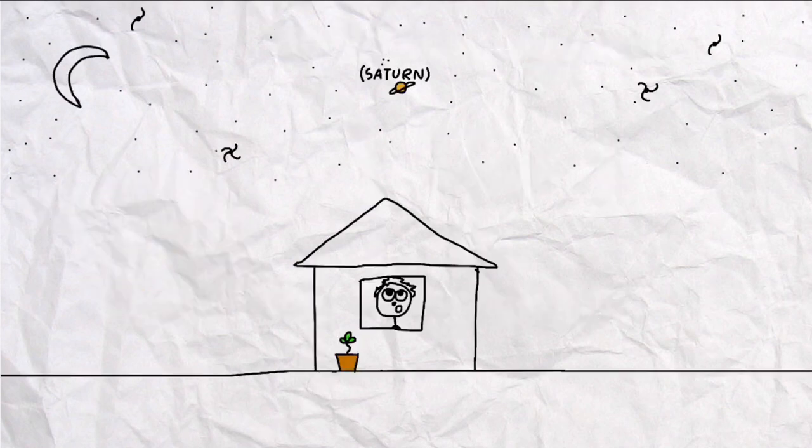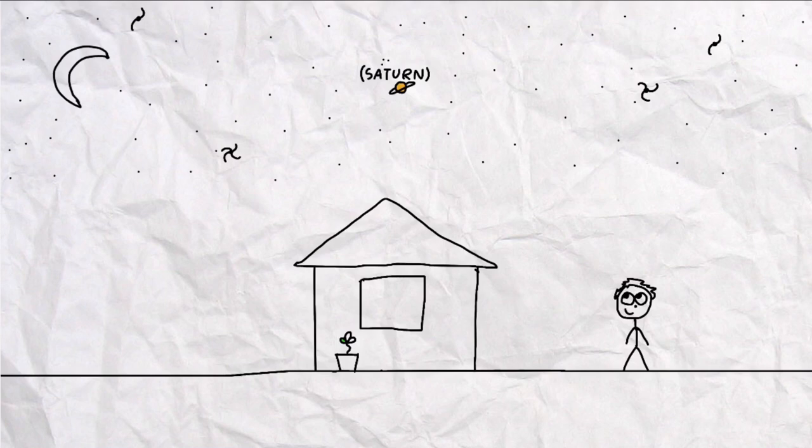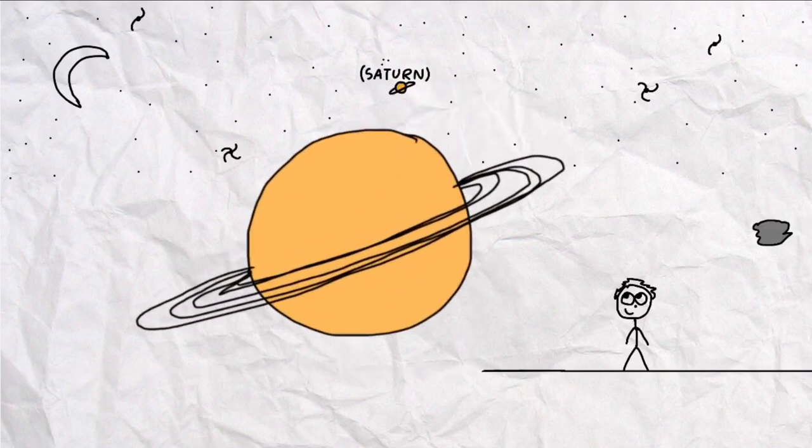When Roche formulated this epic limit, he could explain one of the most fascinating observations and discovery that humans have ever made. Saturn's rings.